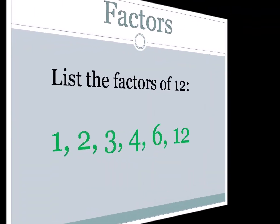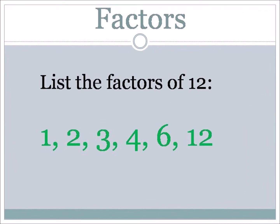Now let's look at the factors of 12. Remember, begin with 1. The factors of 12 are: 1, 2, 3, 4, 6, and 12. All of those numbers can be divided into 12 without a remainder, or the remainder is 0.